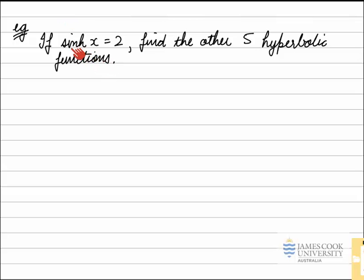In this example, we have been given sinh x equals 2 and been asked to find the other five hyperbolic functions. They are cosh x and tanh x and the three reciprocal functions sech x, csch x and coth x.